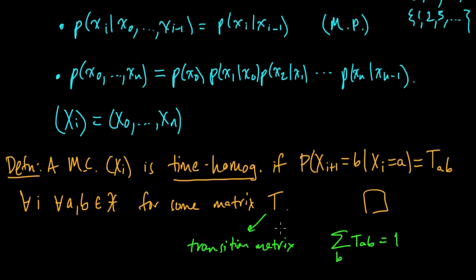That's a stochastic matrix for a discrete Markov chain with a discrete space. More generally, when you have a continuous space Markov chain, the transition matrix — here it's a stochastic matrix — gets replaced by a stochastic kernel, which is just a function on the product of X with itself. Call it a kernel. So that's the first definition: time homogeneous.